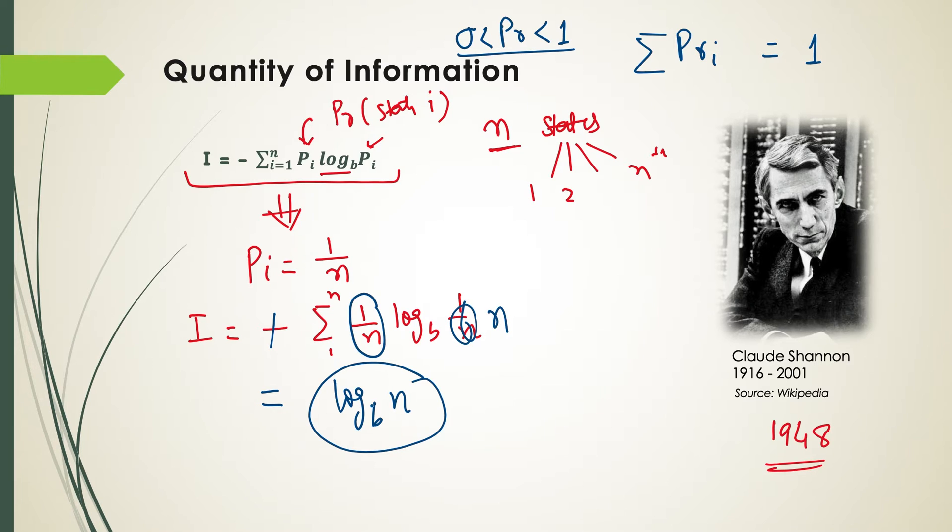So this is the case where we have a system with n states and all states are equiprobable. So we can say that a system with n states has the information log base B of n, and here by convention the smallest natural base of log is 2. So it further simplifies to log base 2 of n.